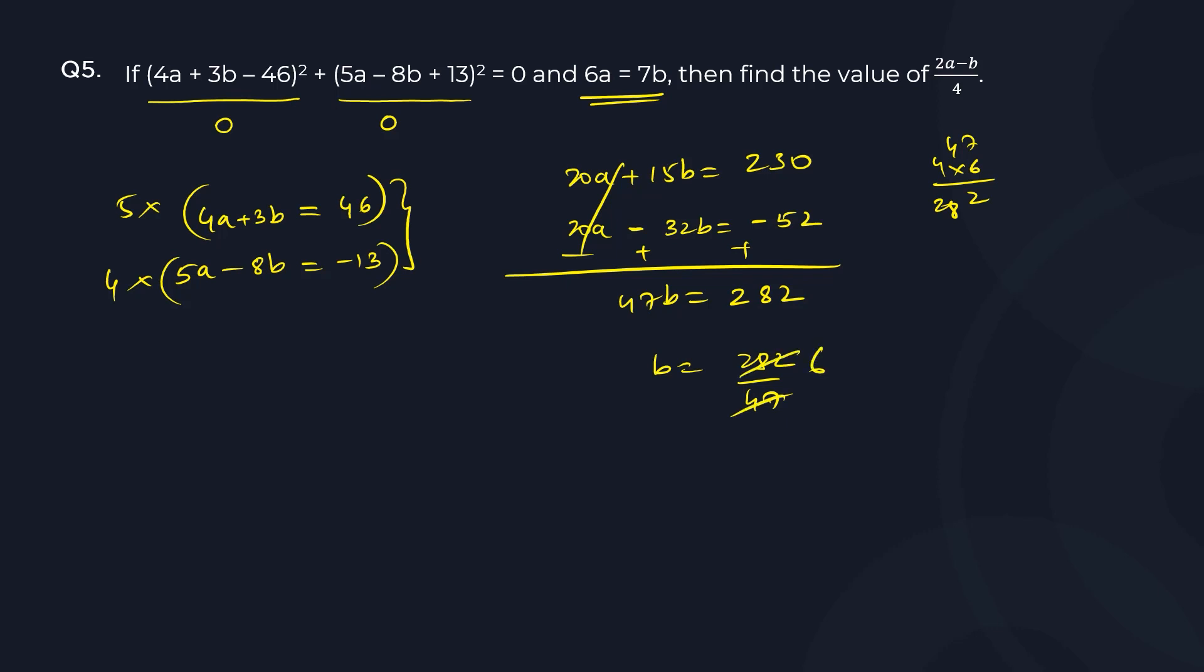If b is 6, then what is a? a should be 7 because we have 6a equal to 7b. So you need 2a minus b divided by 4, which is 14 minus 6 divided by 4. So 14 minus 6 is 8, 8 divided by 4 is 2, and that is your answer.